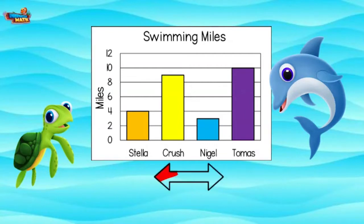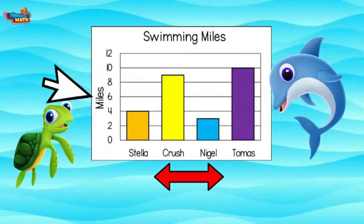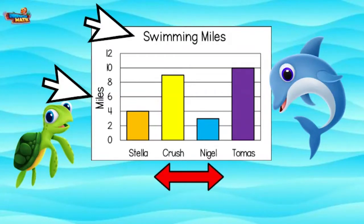This part of the graph represents the categories. In this case, the categories are your friends. The numbers represent the number of miles you swam yesterday. We know this because of the title on the graph and the title next to the numbers.